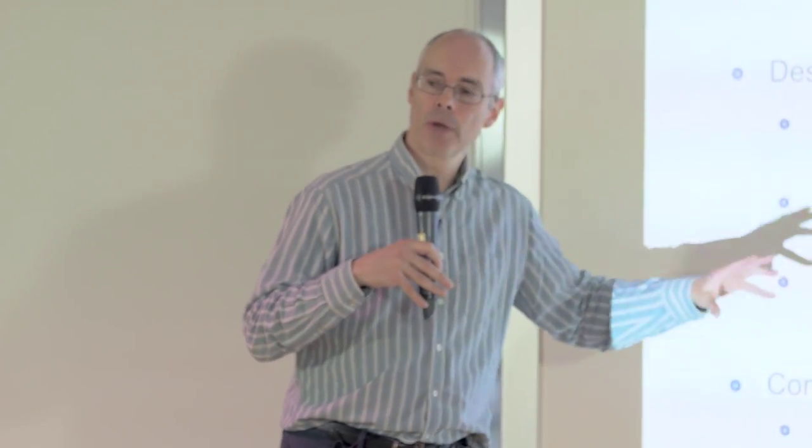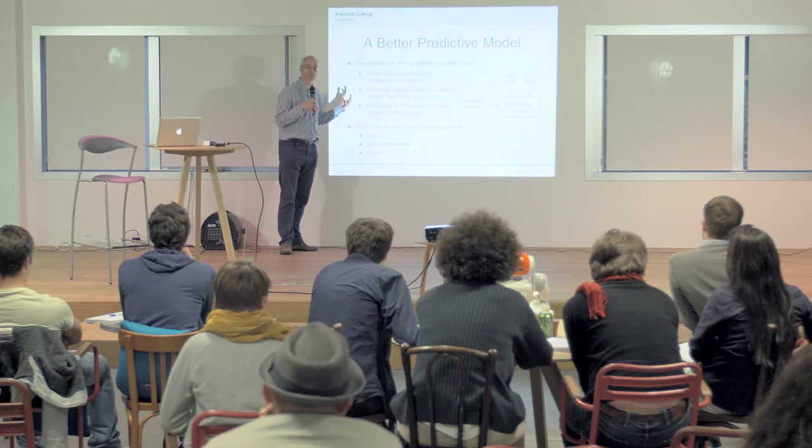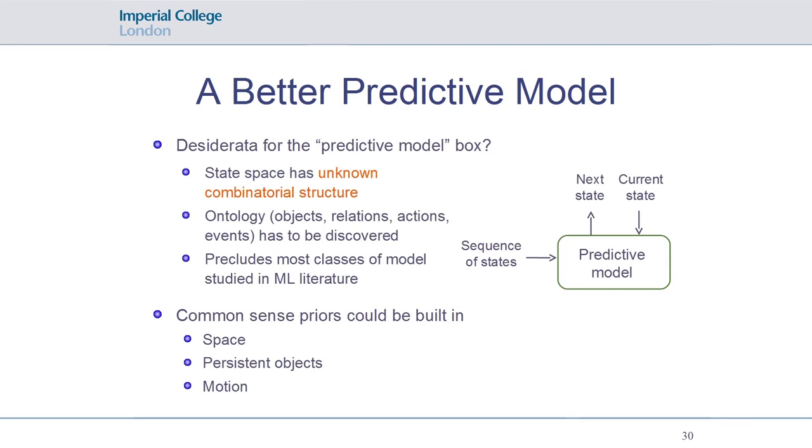This comes down to some of the fundamental priors of common sense, which is the fact that the world has space, things are organized in space, that you have persistent objects and motion. Some of these things are sort of built into DQN because a convolutional neural network inherently builds in the idea of space. But these other notions like the persistence of objects and motion—priors like that aren't built into the current generation of neural networks in machine learning.